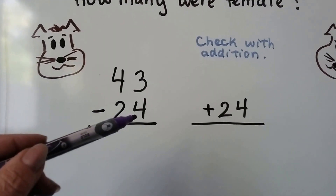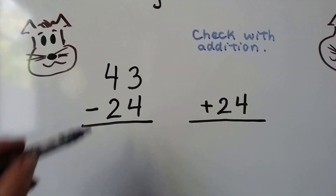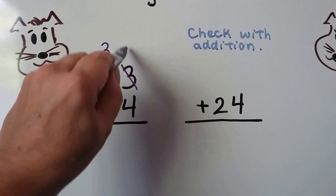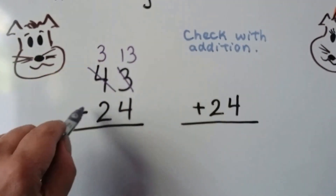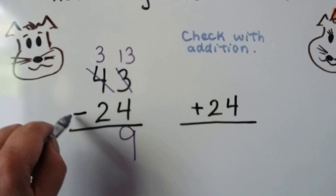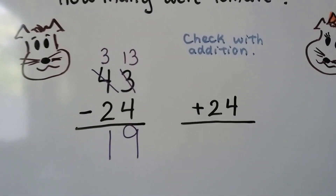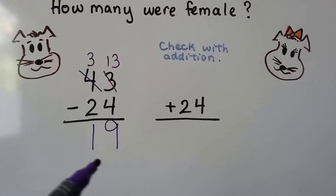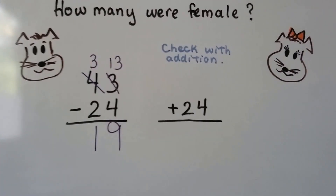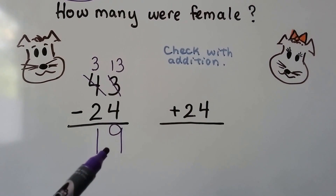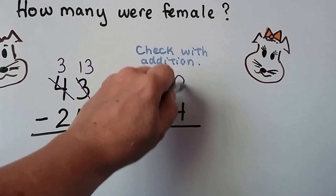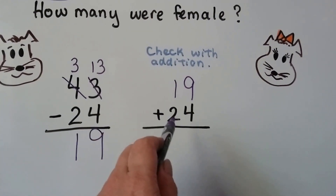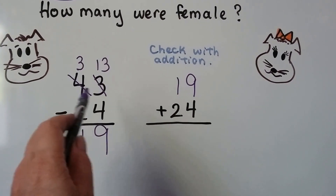We can see the 4 is bigger than the 3, so we need to regroup. The 4 becomes a 3, the 3 becomes a 13. 13 minus 4 is 9, and 3 minus 2 is 1. We can check our answer — our difference — by using addition. We put our difference 19 up here as an addend and add it together with the subtrahend, to try to make it equal to 43, the minuend.